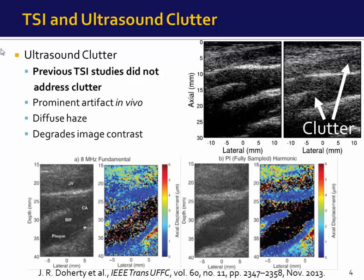Previous studies for TSI did not explicitly address clutter, which is typically a prominent artifact in vivo and presents as a diffuse haze which degrades B-mode image contrast. Dowry et al. showed previously that clutter also degrades the tracking performance for radiation force induced mechanical displacements, and they also showed that pulse inversion tracking can be used to improve displacement estimates in the presence of clutter.